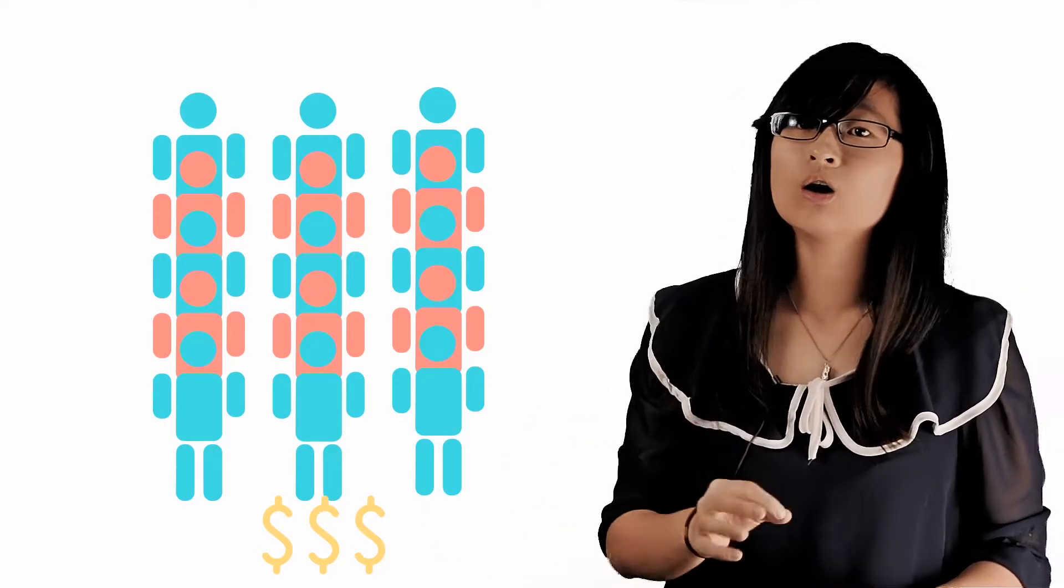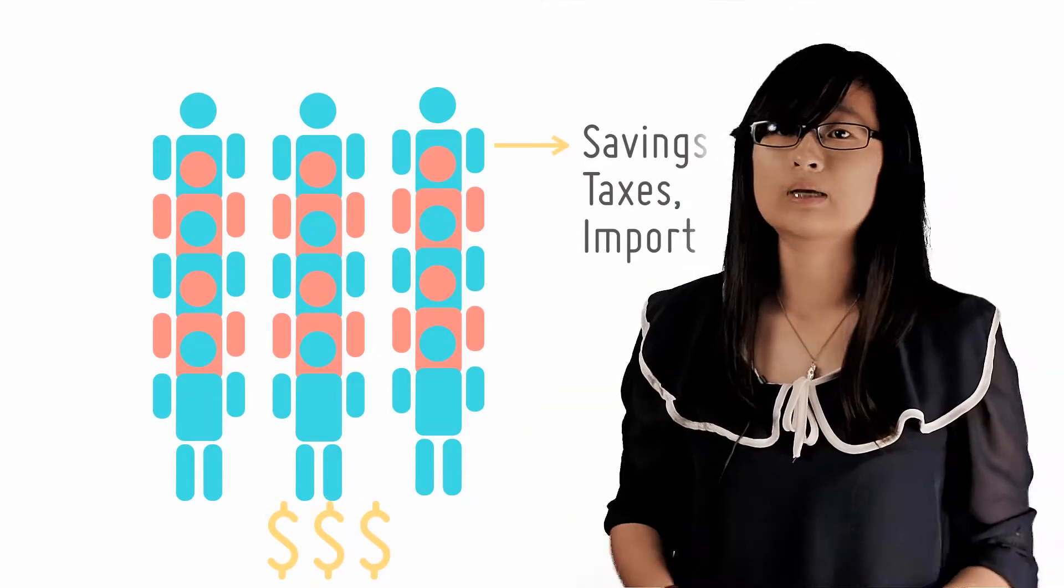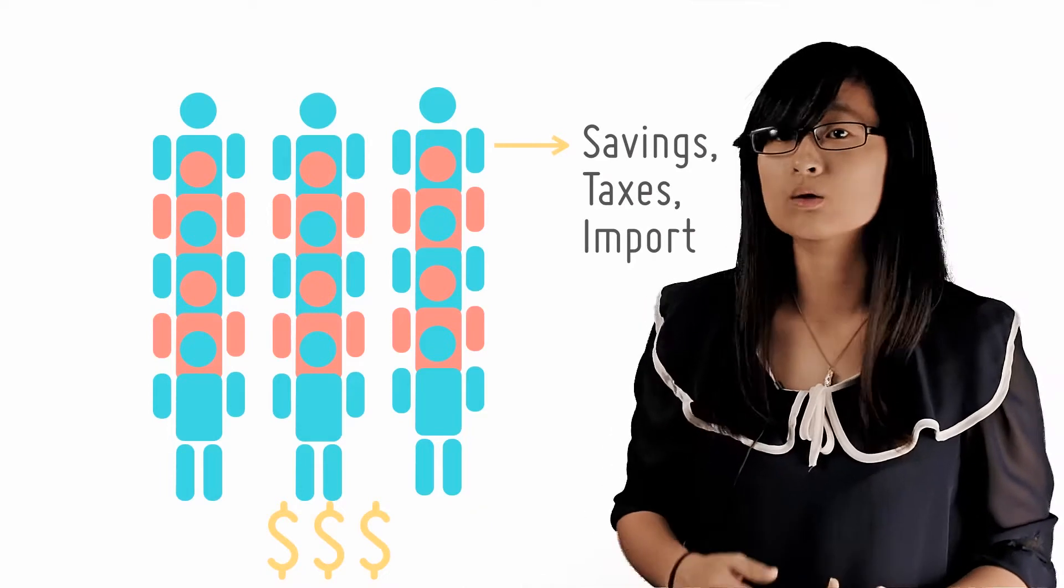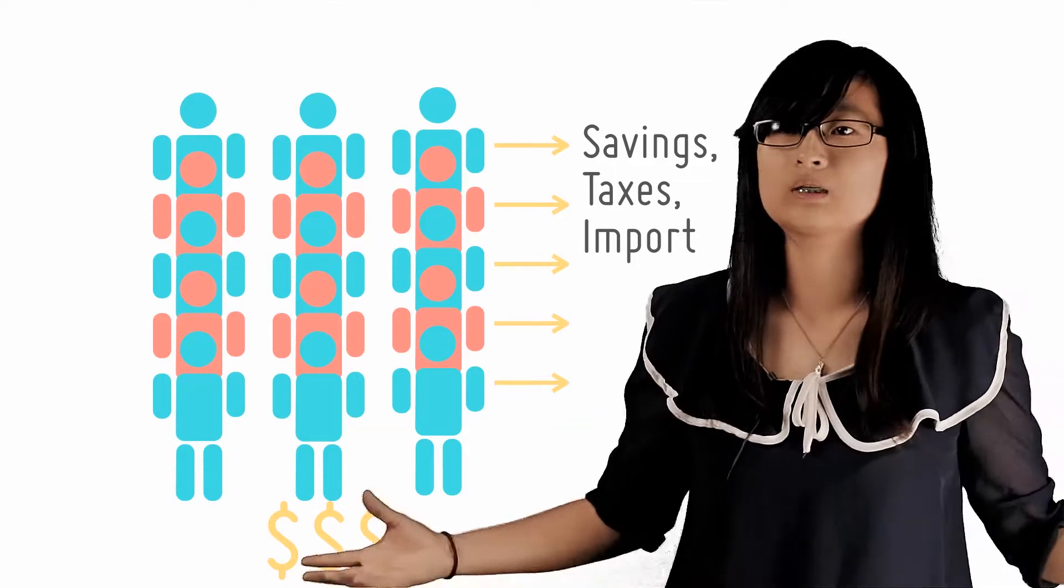However, not all the increases in income will be spent. Some money leaks away from the cycle in the form of savings, taxes or import expenditure. Every time the process repeats itself, some money leaks away.